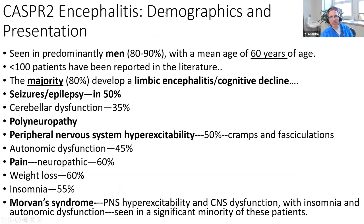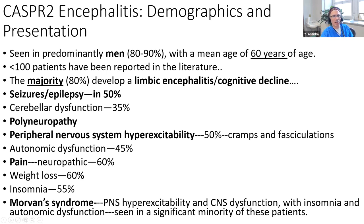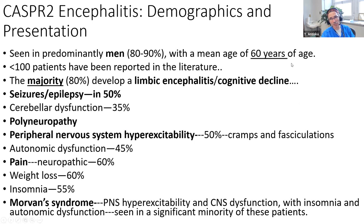This was a patient with CASPR2 encephalitis, seen in almost all older men, and is very rare. The majority have a limbic encephalitis and cognitive decline. Many also have epilepsy and peripheral nervous system issues - cramps, fasciculations, polyneuropathy with neuropathic pain. You might think it's a neuropathy, except there are a lot of cramps and fasciculations, which you don't commonly see in typical neuropathies, plus cognitive decline which you wouldn't see in neuropathy.